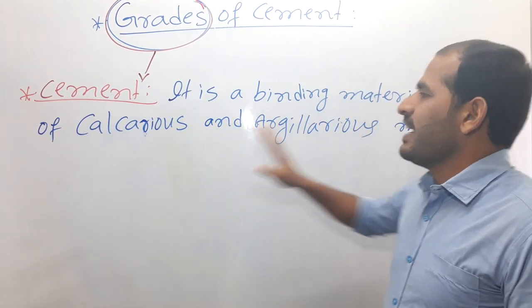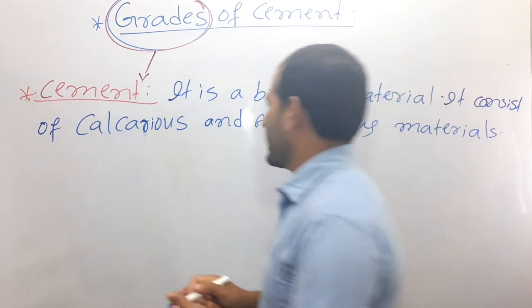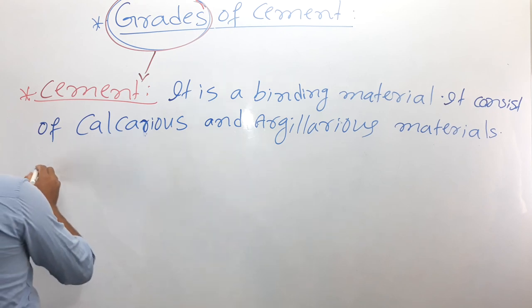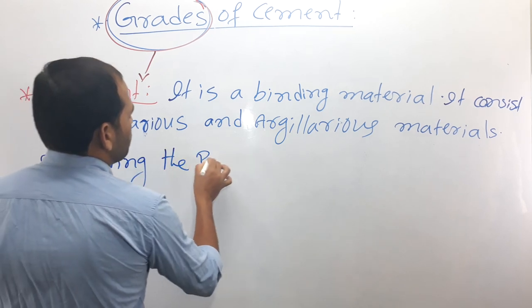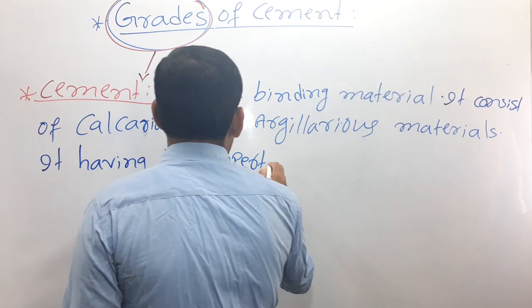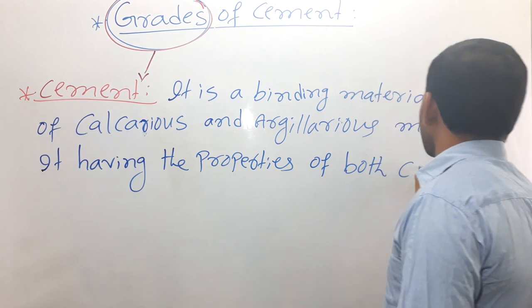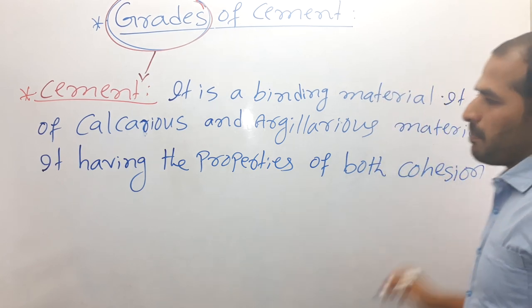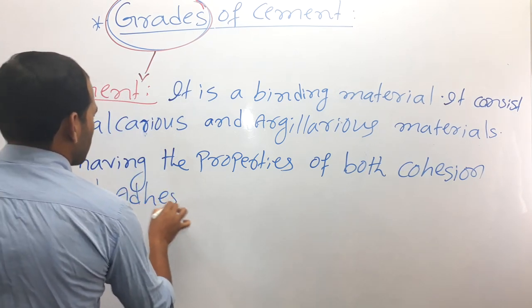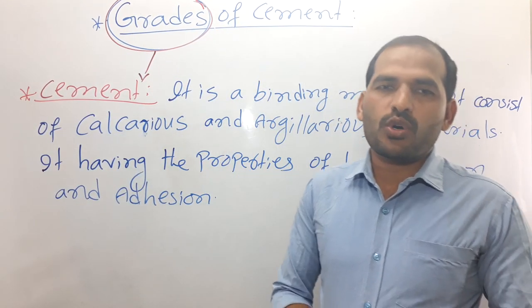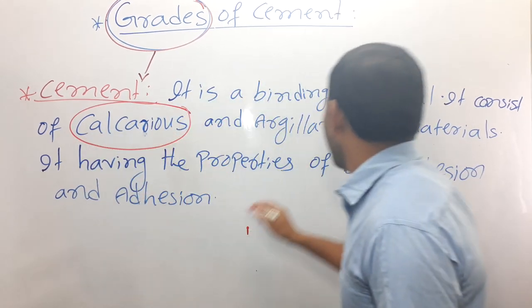Cement consists of calcareous material and argillaceous material. It has the properties of both cohesion and adhesion.